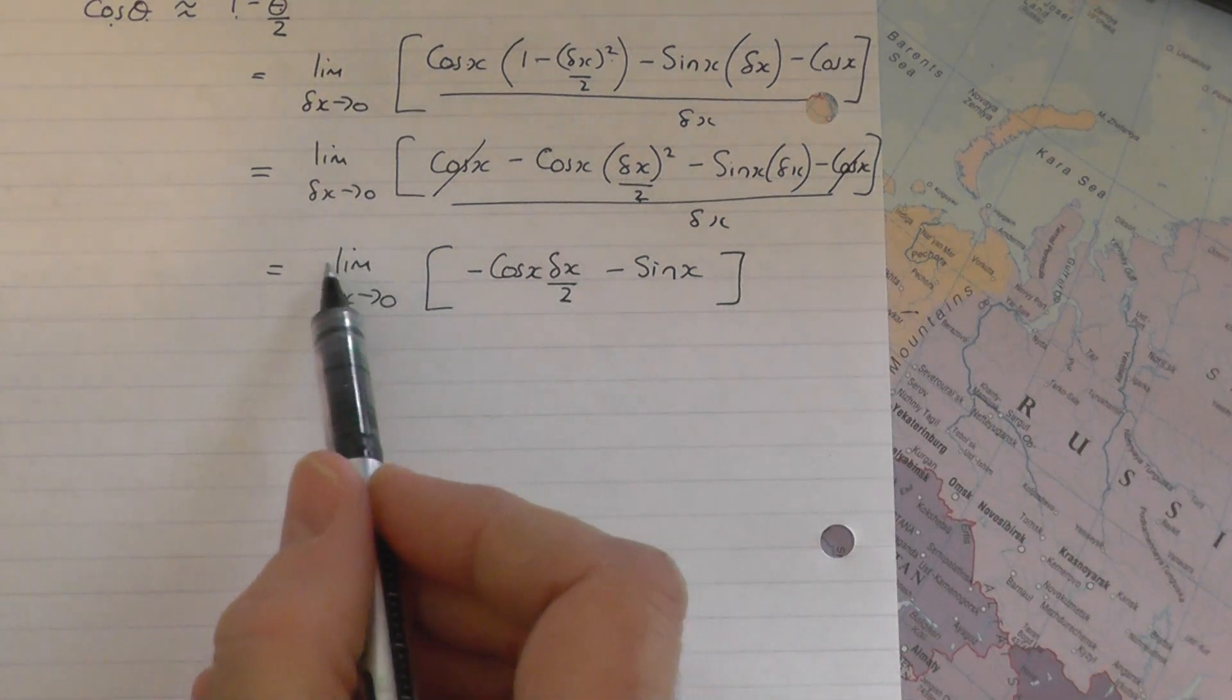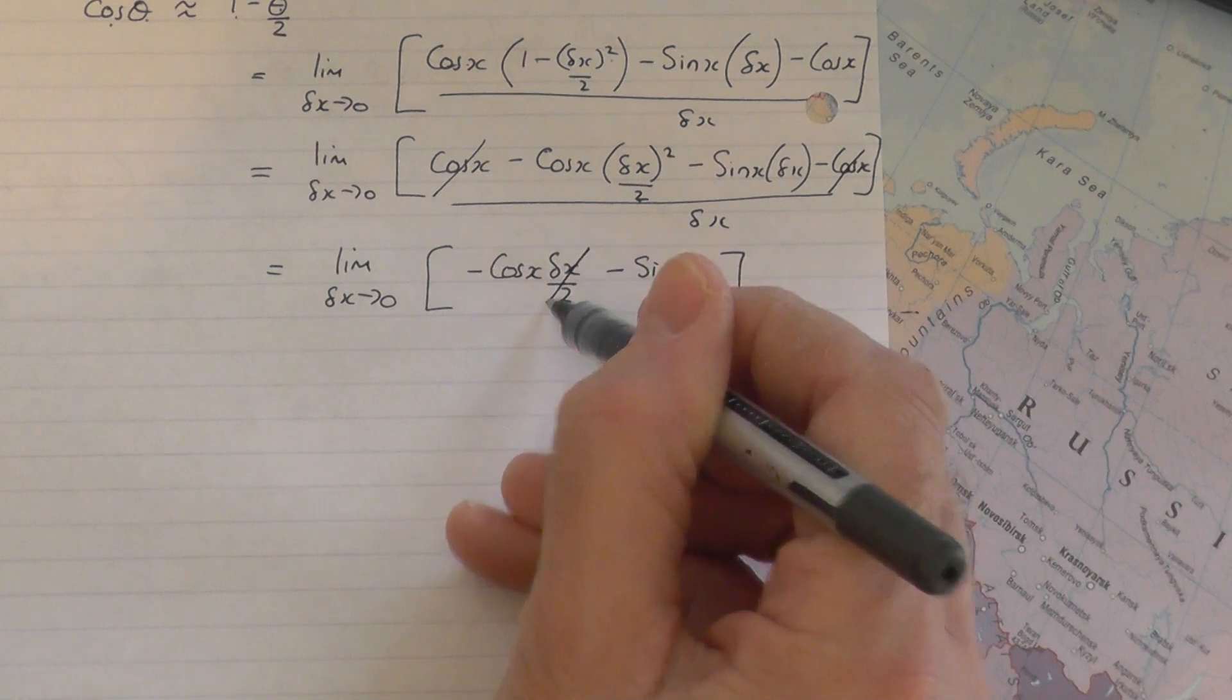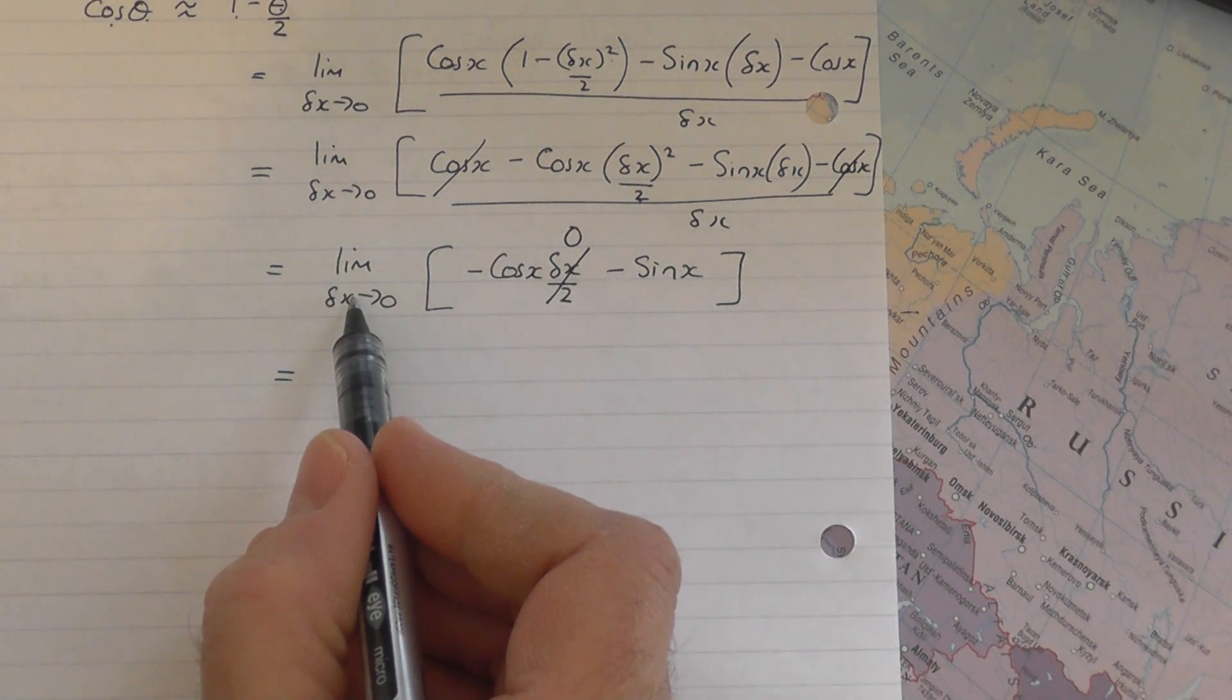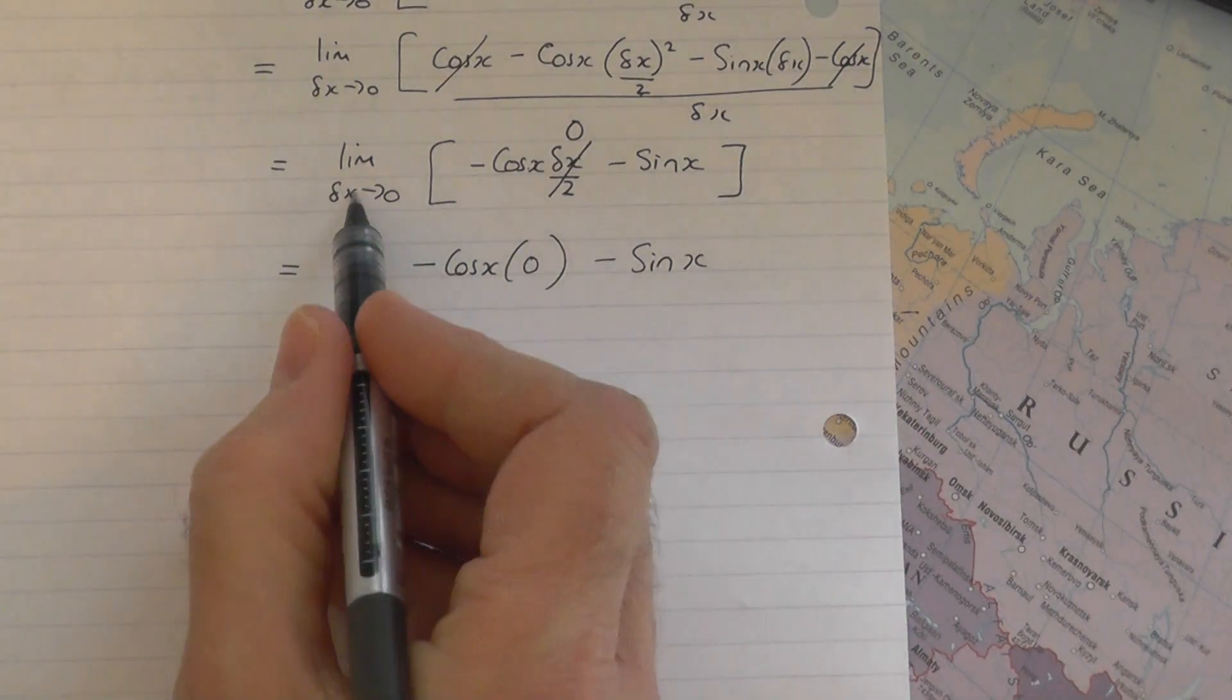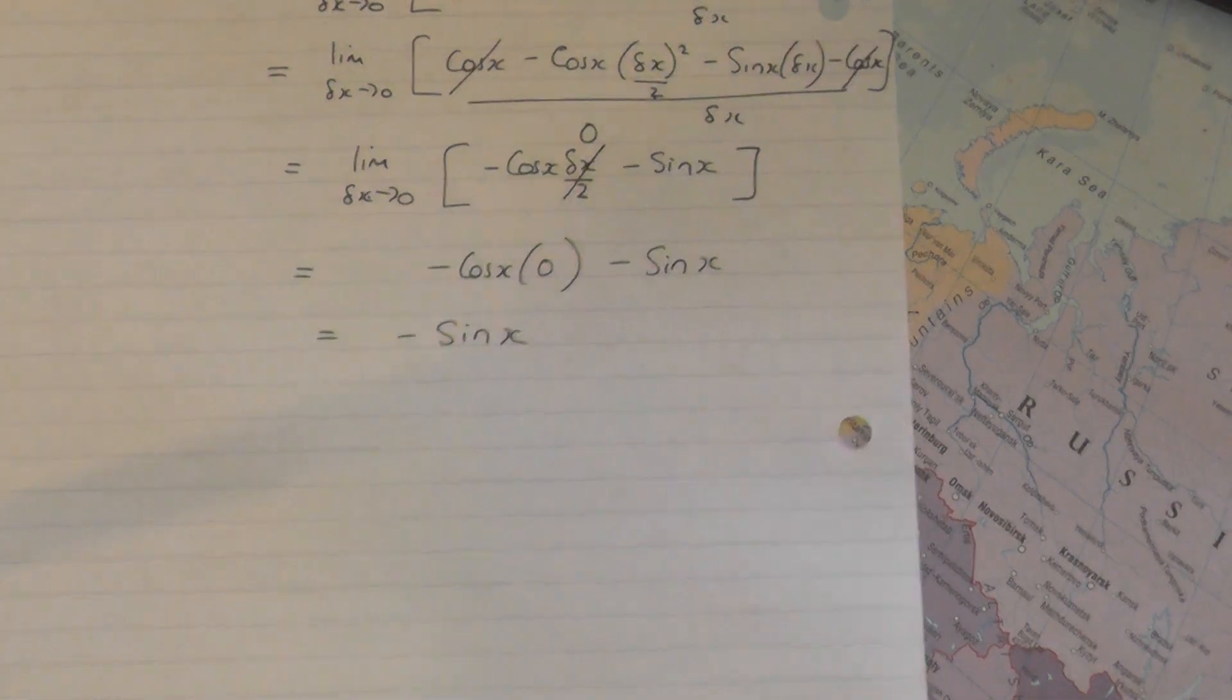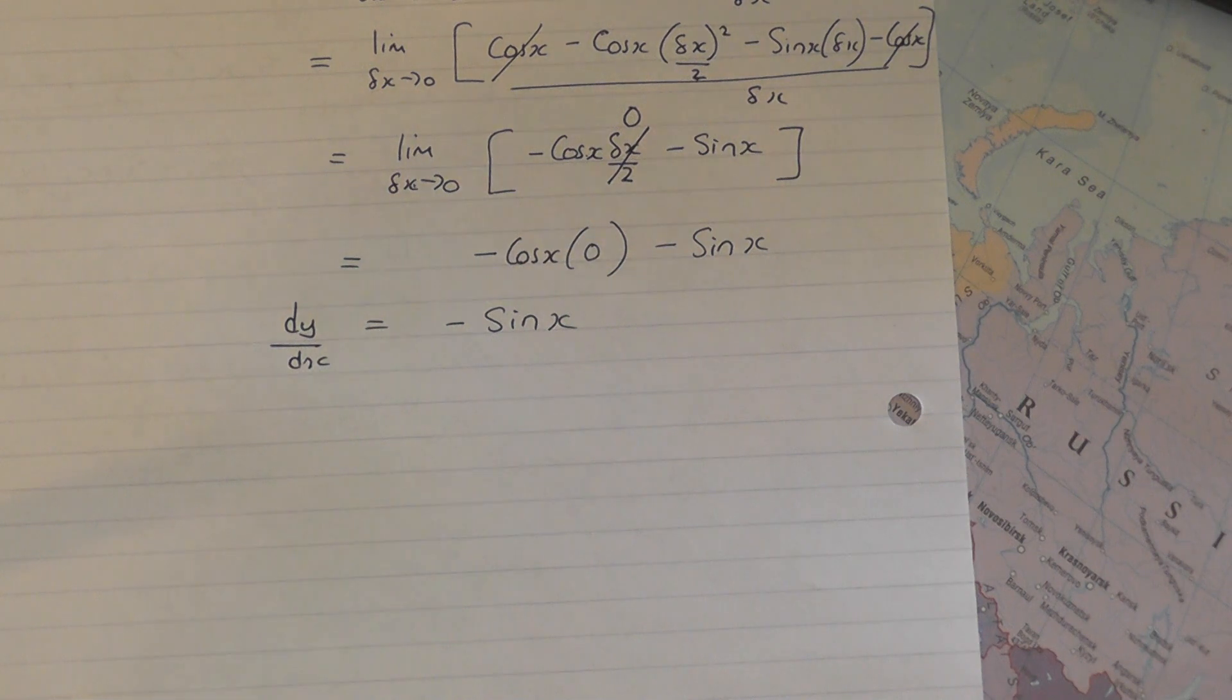And now ultimately I make the full application of delta x tending to 0, so all delta x's here shrink to nothing. That bit of the expression there, delta x over 2, that becomes nothing. So you end up with, if I apply this principle now, minus cos x times nothing, minus sine x is what you end up with when you apply delta x tending to 0. That times nothing is nothing, and then you just end up with minus sine x. And there's the answer that you should be familiar with. When you differentiate cos x, you end up with minus sine x. So dy by dx is minus sine x. And there you go, that's how you differentiate cos x from first principles.